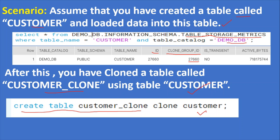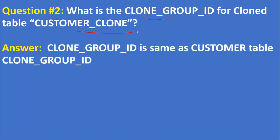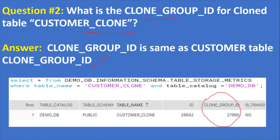The source table is customer. The question is: what is the clone group ID for the cloned table customer_clone? The answer is the clone group ID is the same as the customer table's clone group ID. From the same TABLE_STORAGE_METRICS metadata, the clone group ID is the same, whereas the table ID is different between the clone table and the original customer table.